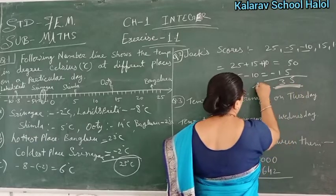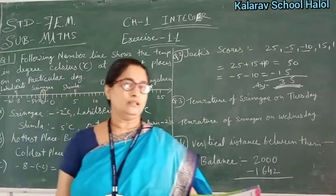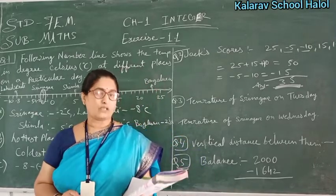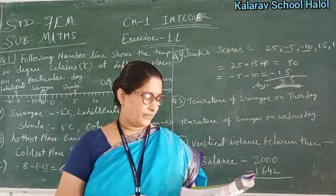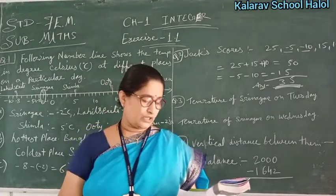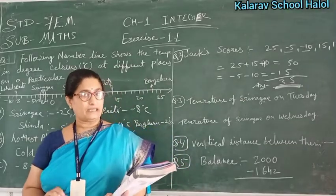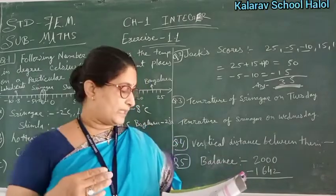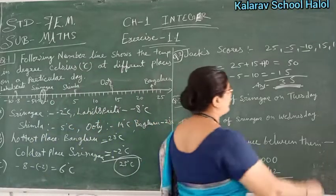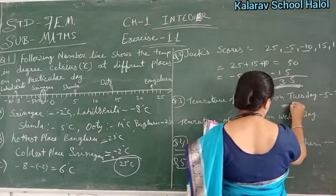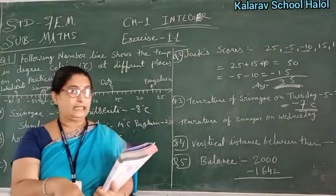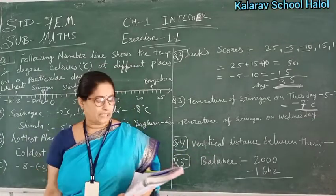Minus 5 minus 10 is minus 15. The total answer is 35. Then question number 3A: Srinagar's temperature was minus 5 degrees Celsius on Monday and then it dropped by 2 degrees Celsius on Tuesday. Monday was minus 5, Tuesday dropped by 2 more — it means minus 5 minus 2 equals minus 7 degrees Celsius.